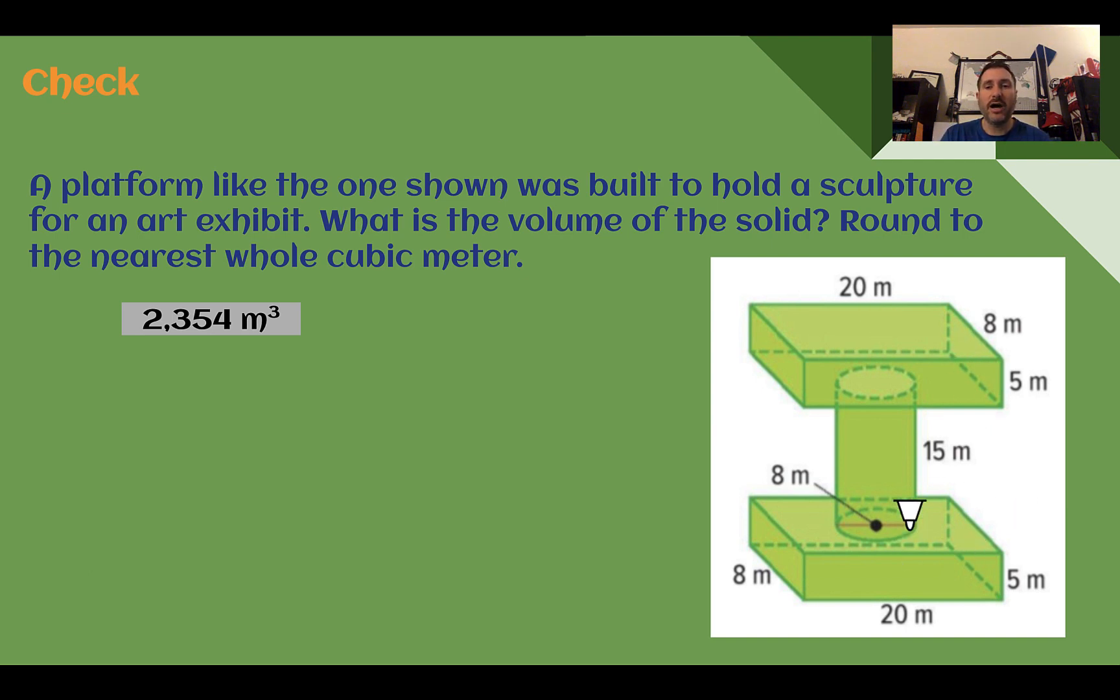First, we have two objects here. We have a rectangular prism and we have a cylinder. Notice the size of this rectangular prism on the top is the same as the one on the bottom. They're both 5 tall, they're both 20 wide, and they're both 8 deep. So if we find the volume of one of these prisms, then just double that since we have two. So a prism is just length times width times height, and we have two of them. So we can just figure this out: 20 times 8 times 5, 20 times 5 is 100, 100 times 8 is 800, and there are two of them. So 1600 is the top one and the bottom one.